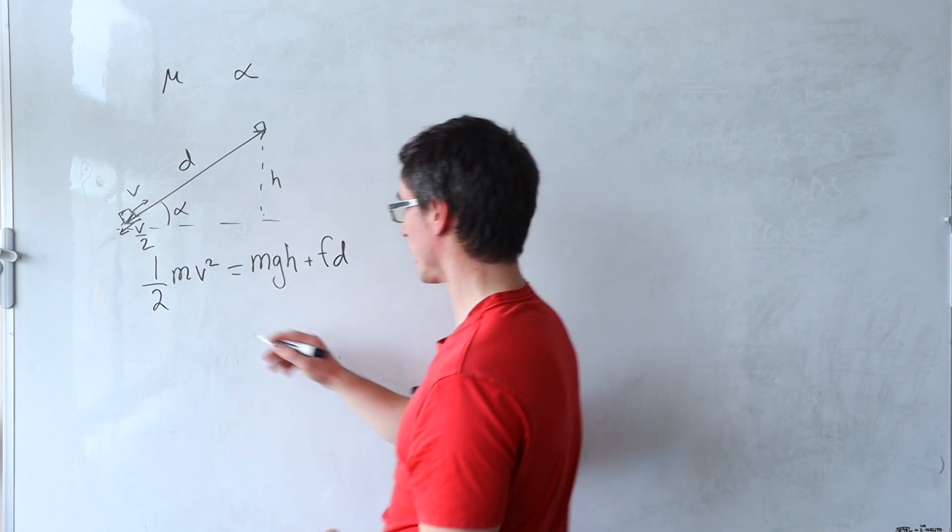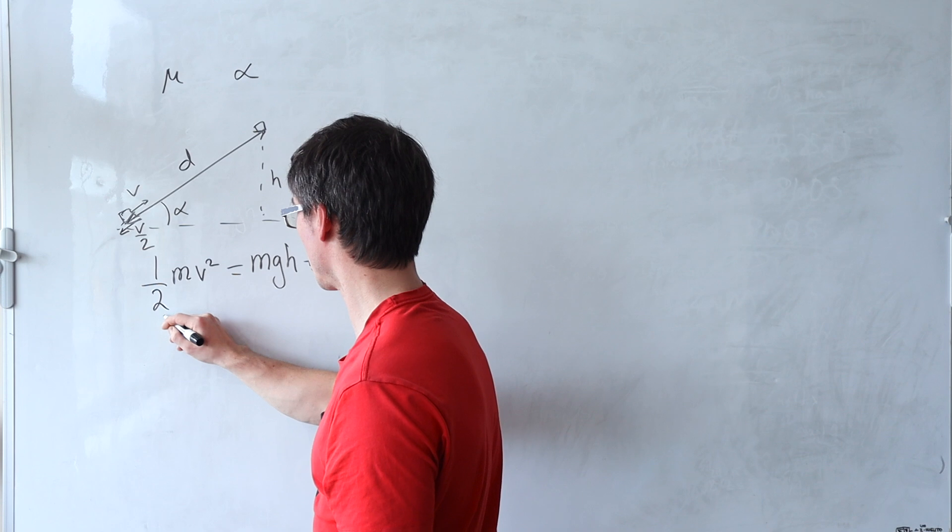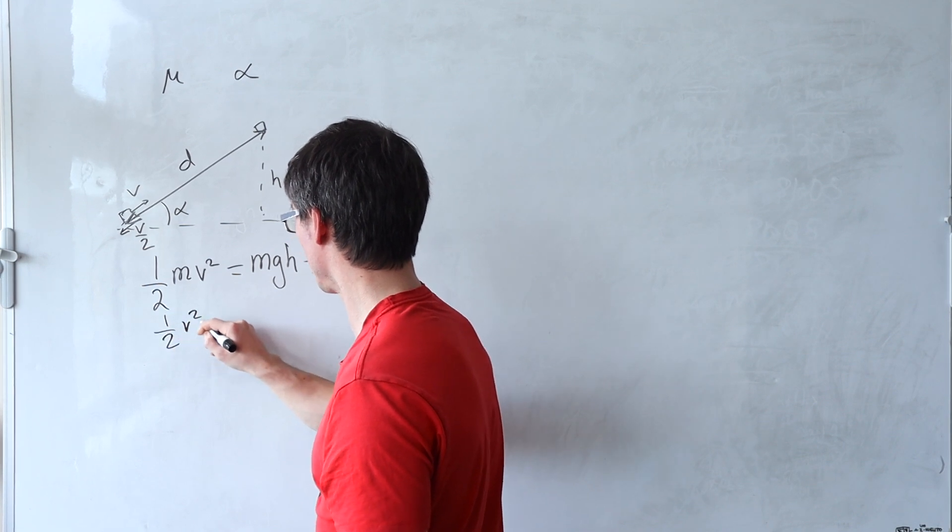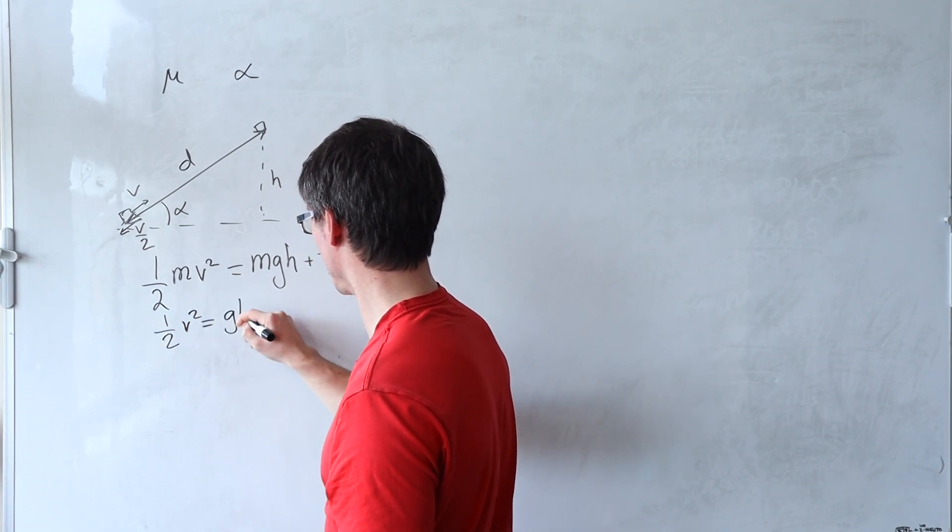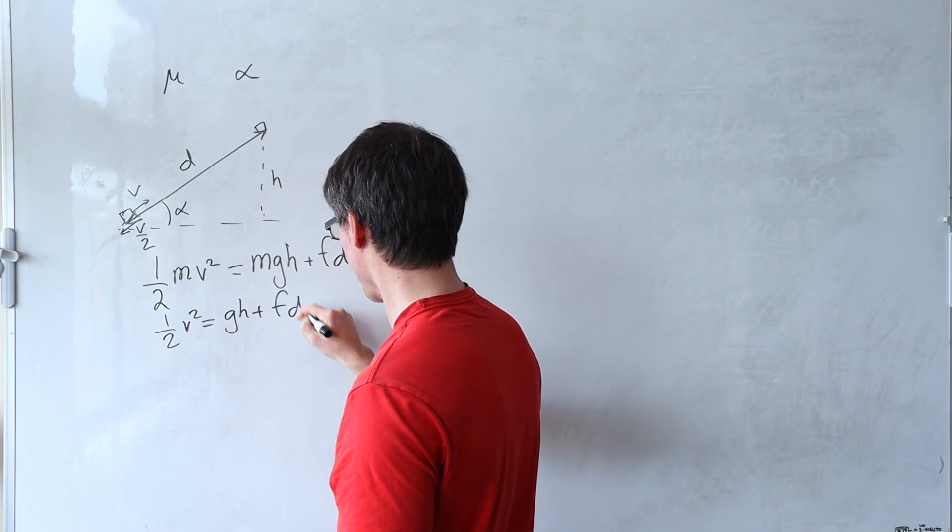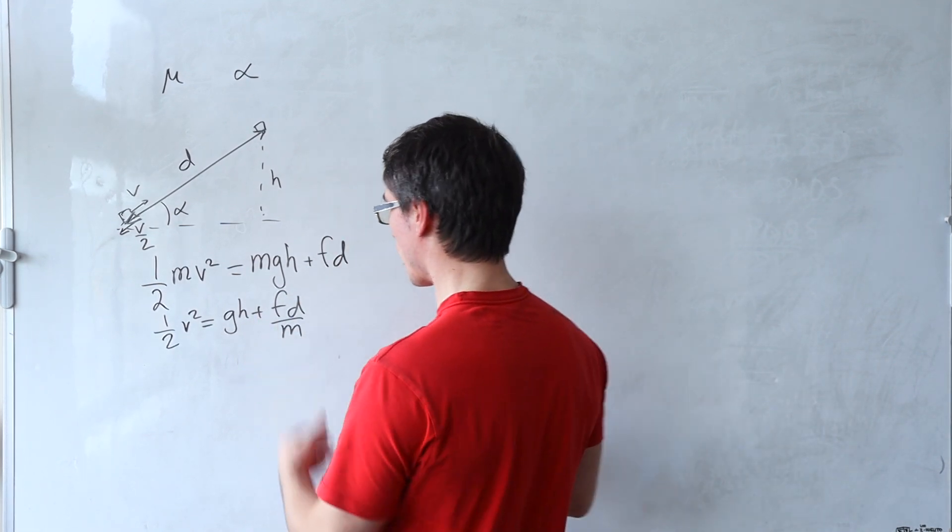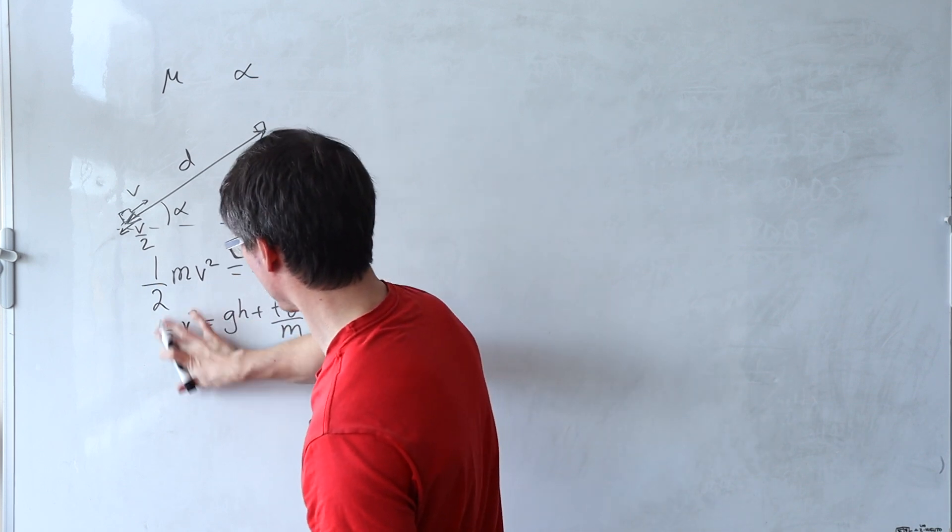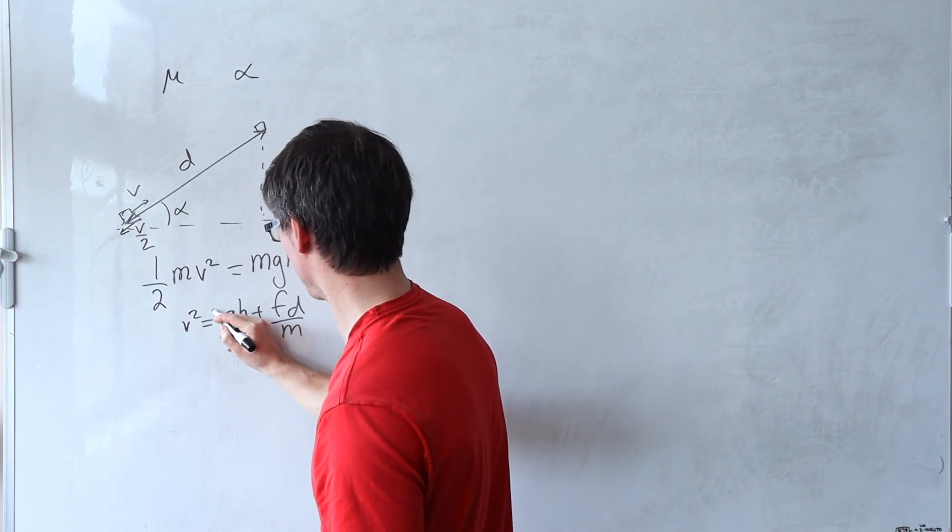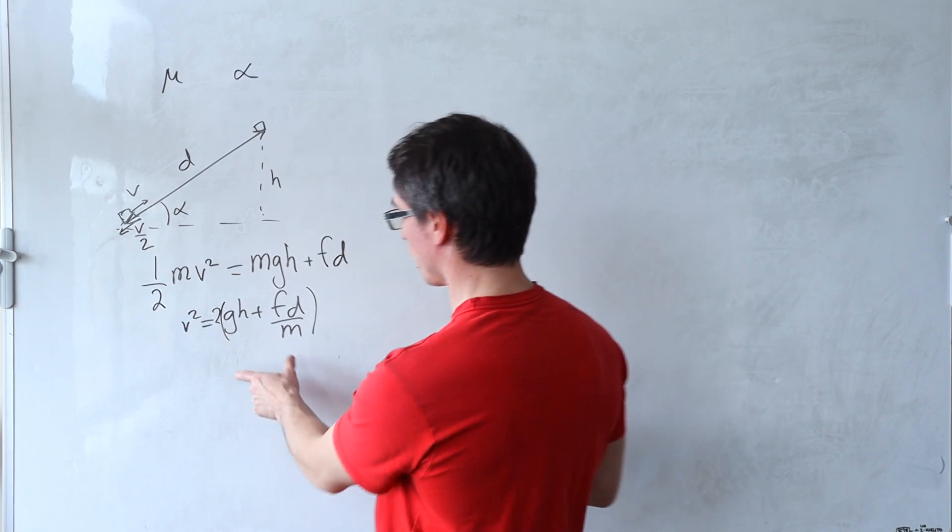Okay, we can now probably simplify this. So we can say that a half v squared is equal to gh plus fd divided by m. And we can also multiply both sides by two.